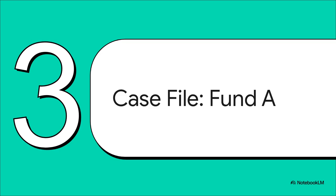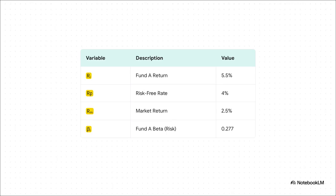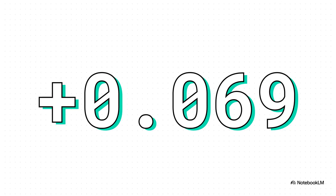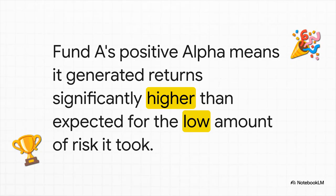Let's put this tool to work. We're going back to Fund A to see what the numbers really have to say. Here's all the evidence: we've got the fund's actual return, the risk-free rate, the market's return, and the most important clue of all — Fund A's beta, our measure of its riskiness compared to the market. With all our data points lined up, we plug these values right into our Jensen's Alpha formula. And the verdict is in: the alpha for Fund A is positive 0.069 — a very impressive plus 6.9%. Fund A wasn't just a good investment, it was an excellent one. That manager delivered way more return than you'd expect for the pretty low amount of risk they took. That is skill.